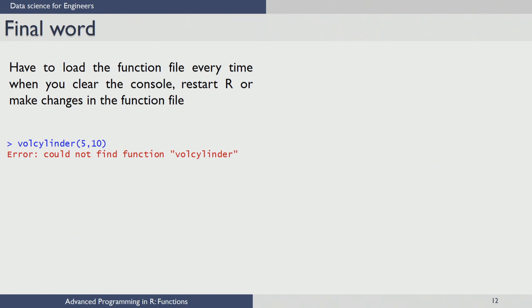A final word: you need to load the function file every time you change something inside the function definition — either restart R Studio or reload after making changes. If you do not do that, you may get an error or incorrect outputs because the updated definition was not reloaded. Once you save the updated version, you also have to source it before use. In the next lecture, we are going to explain functions with multiple inputs and multiple outputs. Thank you.